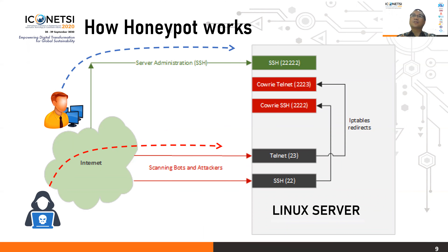The way a honeypot works is we place it on specially designed ports where most ports are used for administration. For example, SSH port 22 is used for managing the server remotely. We move the actual admin service to another port, such as 22222, so the server administrator uses that port. Port 22 is then used as the honeypot, so if an attacker attacks on port 22, they are redirected to a special port — such as 22222 — where we capture the honeypot interaction.